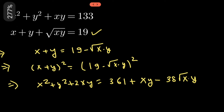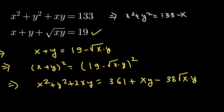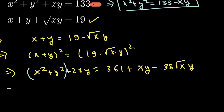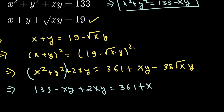From the first equation, subtracting xy from both sides gives x² + y² = 133 − xy. We substitute this value of x² + y² into our expanded equation. The equation now becomes: 133 − xy + 2xy = 361 + xy − 38√(xy).